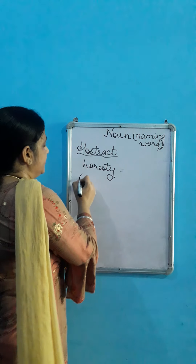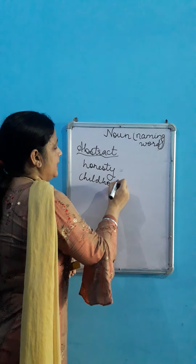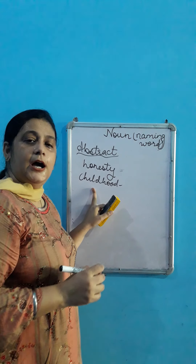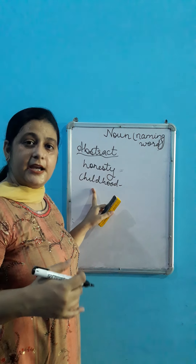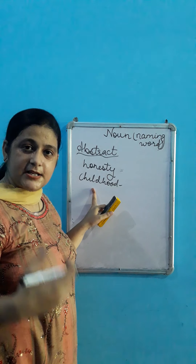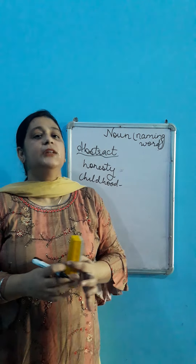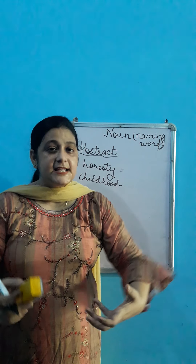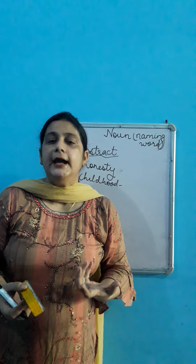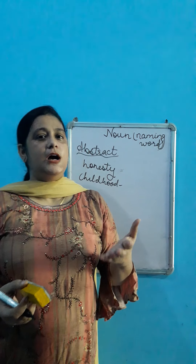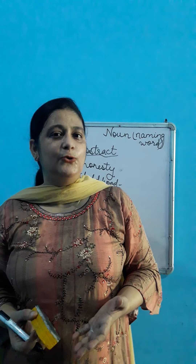Childhood. Ab childhood kya hai? Ab bachpan hai — hum dekhte to nahi ki bachpan kahan pada hai. Sirf hum usko mahsus karte hain, experience karte hain. Toh jo bhi cheezein hain jinko hum na dekh sakte hain, chhu sakte hain, only experience kar sakte hain — that is called abstract noun. So, our topic is complete. I hope this is clear to you. Thank you.